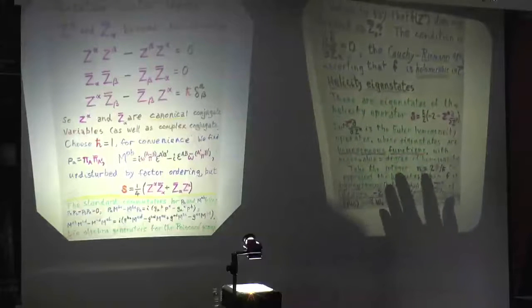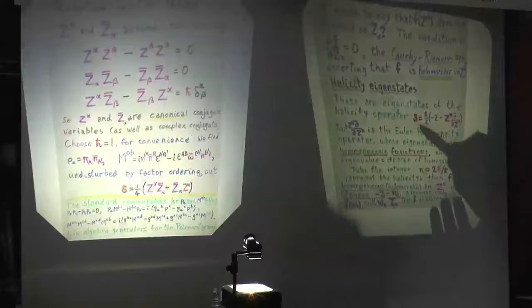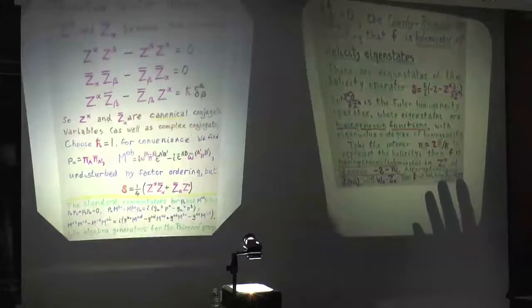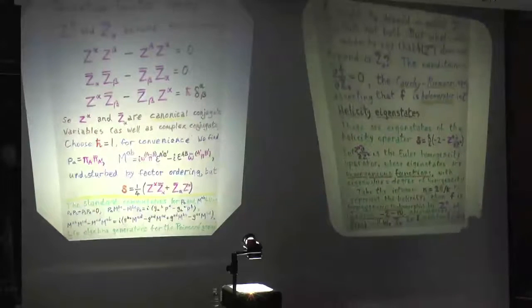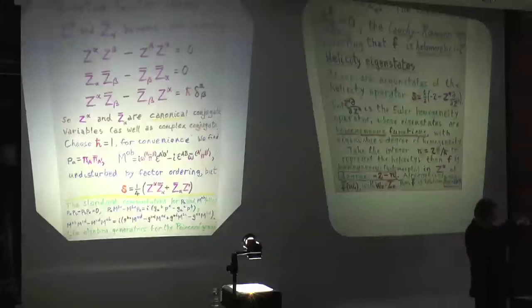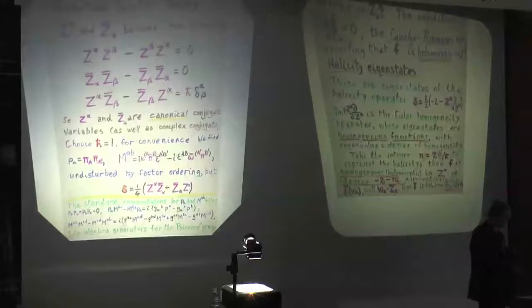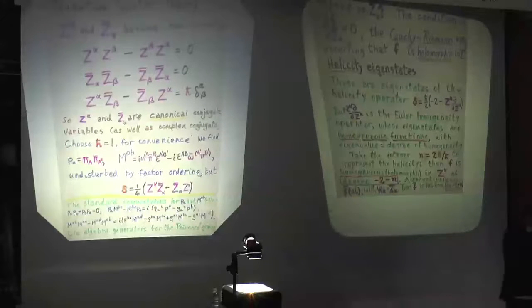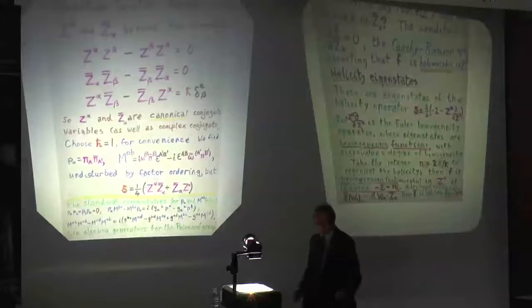Suppose you're looking at a wave function which describes a particle with a definite helicity. What does that mean? You look at the helicity operator S, fiddle around with it, and you see it says that your function, if it's going to have a definite helicity, has a definite homogeneity. That means if you multiply your twister by some number, then the whole wave function gets multiplied by some power of that number — that power is the homogeneity degree. It's a very neat way of talking about massless particles: they are described by holomorphic functions which are homogeneous of a very particular degree, that degree describing exactly the amount of spin that particle has.